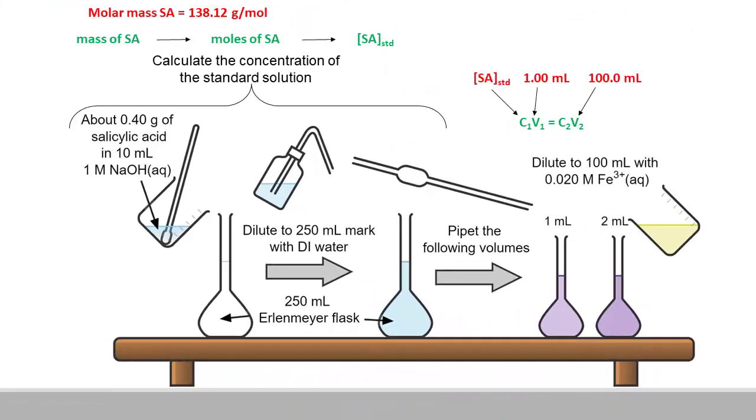The following video will talk you through some of the data processing that's required for Lab G. In order to make a plot of absorbance at your designated wavelength max versus concentration of the standard, you will need to calculate the concentration of salicylic acid in each solution.